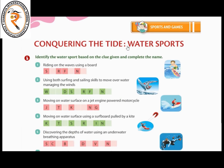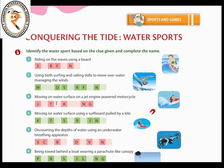Next is Conquering the Tide — about water sports. You have to find the name of the water sport based on the description. Riding on the waves using a board is surfing. Moving on a water surface on a jet engine-powered motorcycle is jet skiing. Moving on the water surface using a surfboard pulled by a kite is called kite surfing.